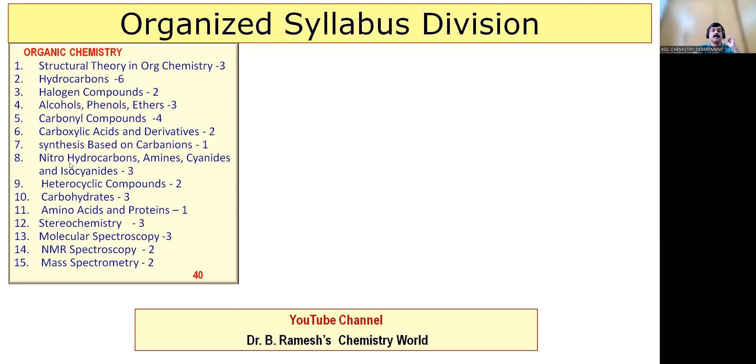Carboxylic acids and derivatives, 2 marks. Synthesis based on carbonions, 1 mark. Nitro hydrocarbons, 3 marks. Heterocyclics, 2. Carbohydrates, 3. Amino acids and proteins, 1. Stereochemistry, 3.